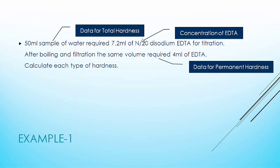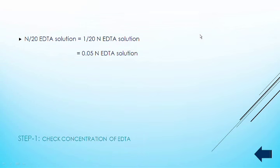Let's simplify first this concentration of EDTA. n/20 means 1/20 normal, that is nothing but 0.05 normal. So here we got the concentration or normality of the EDTA solution.